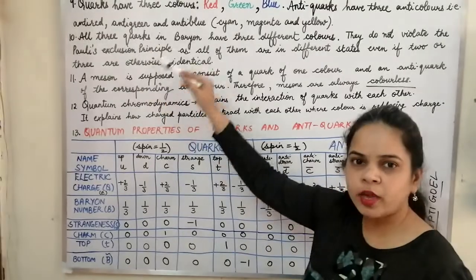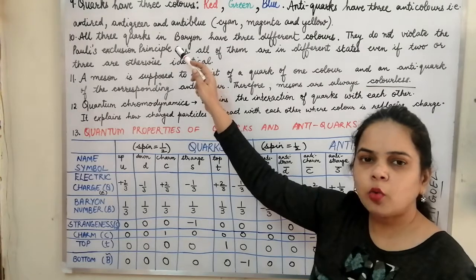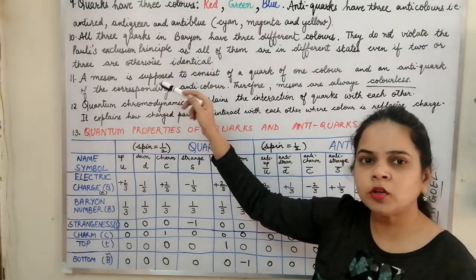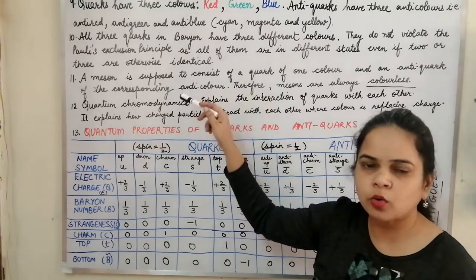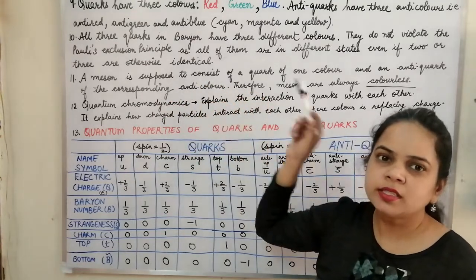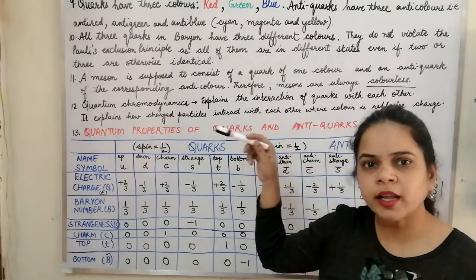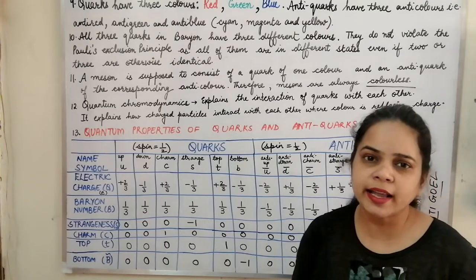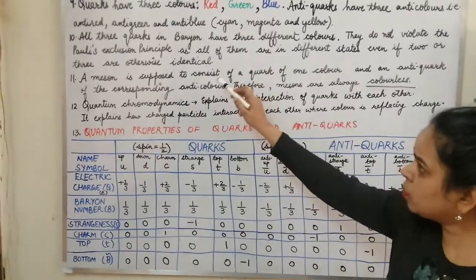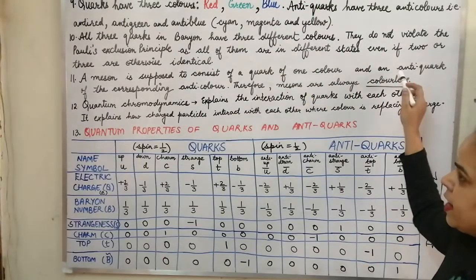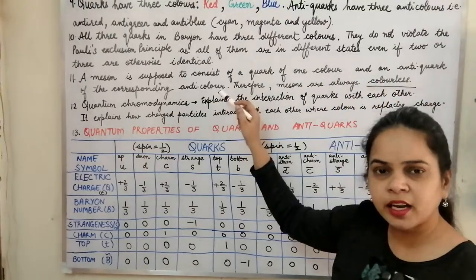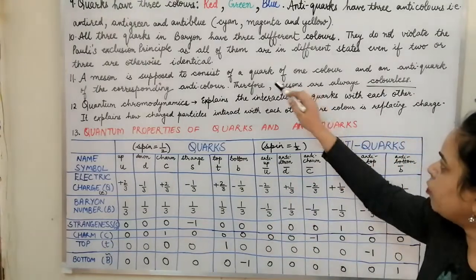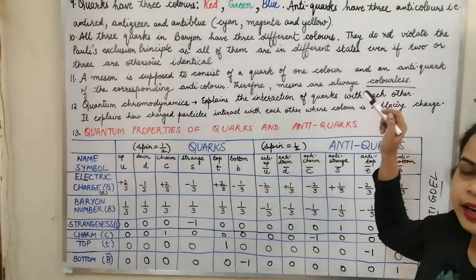In a meson, which is a constitution of one quark and one anti-quark, since the quark is of one color and the anti-quark is of anti-color, the meson is always a colorless particle. A meson consists of a quark of one color and an anti-quark of the corresponding anti-color, so color and anti-color mix to form a colorless substance. Therefore mesons are always colorless.